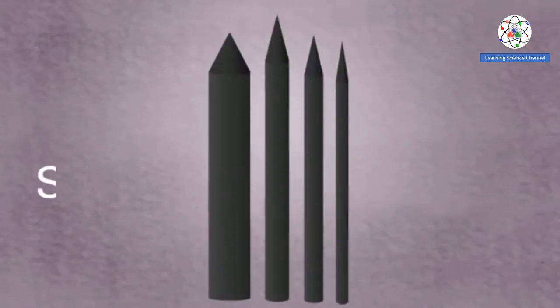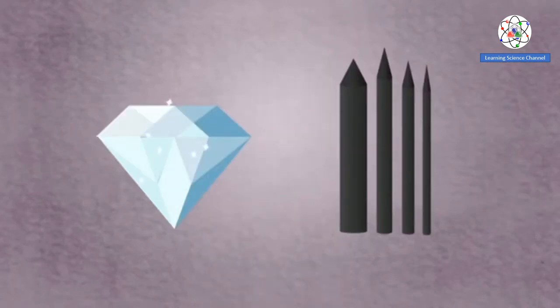Graphite is black, not nearly as strong as diamond, and can conduct electricity. These differences are due to the arrangement of carbon atoms within the structure.